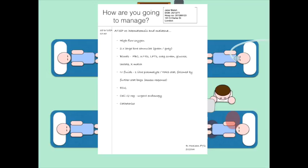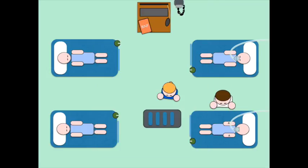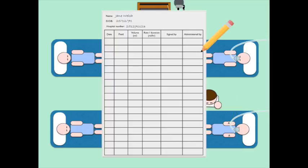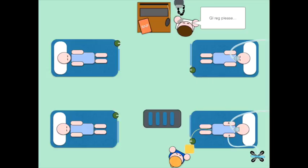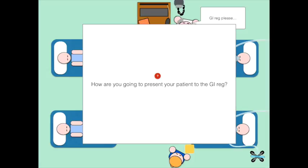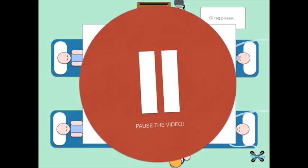So we've got the high flow oxygen on, we've inserted two large-bore cannulae and we are taking the necessary bloods. We're going to prescribe an appropriate fluid for resuscitation and now we're at a point where we can phone the GI registrar. Have a go at this now, ideally with a friend, speaking out loud on how you would present this patient to the GI registrar.